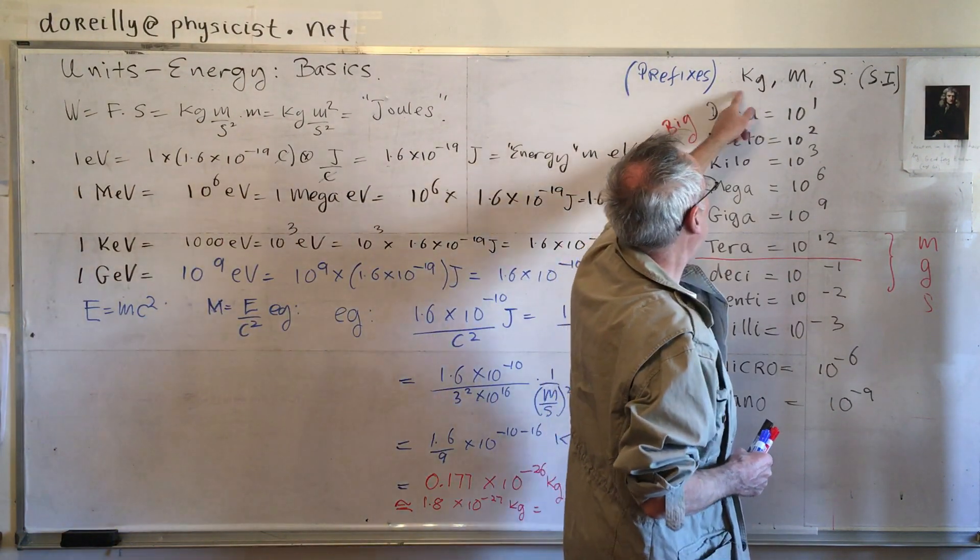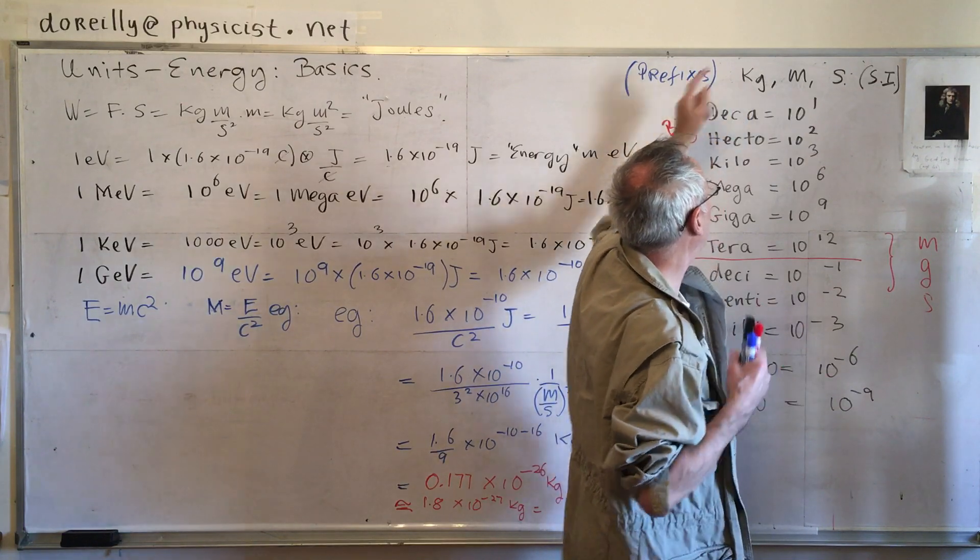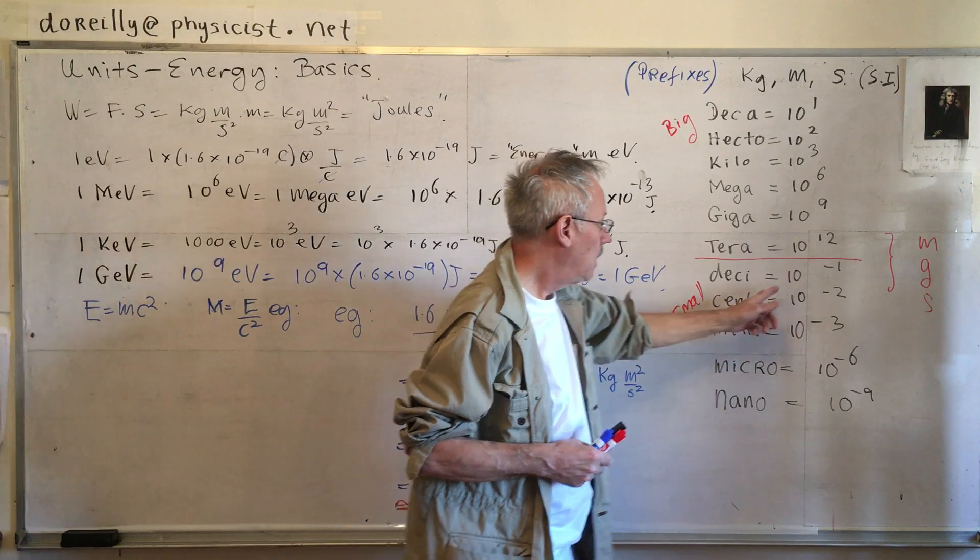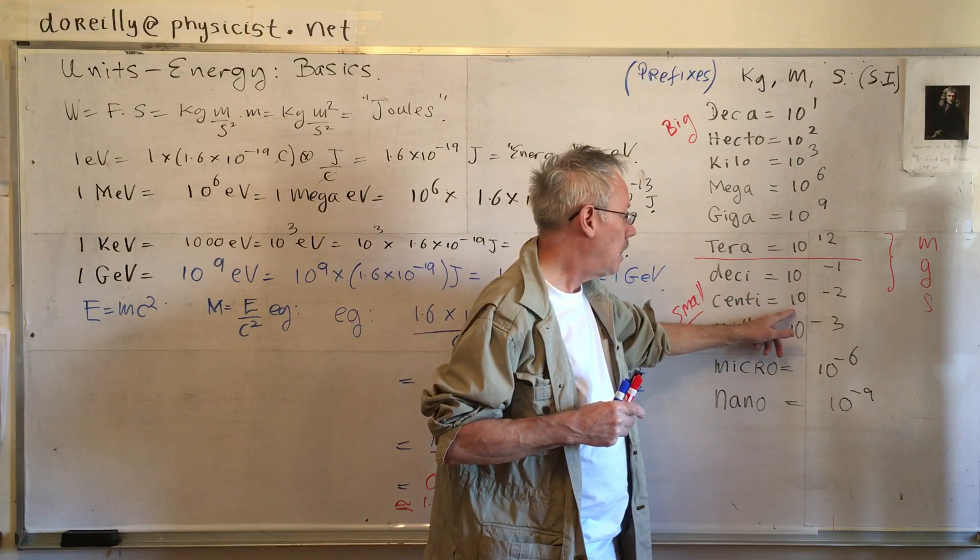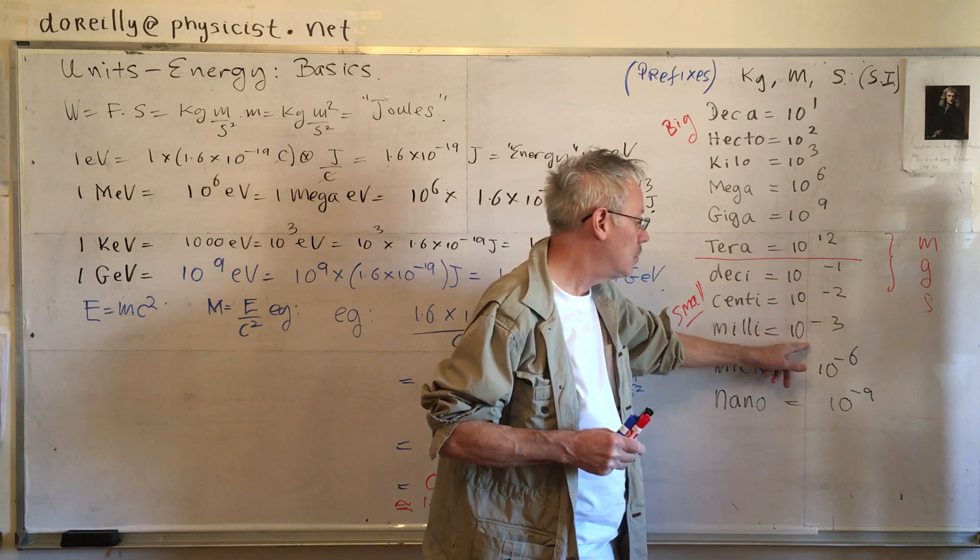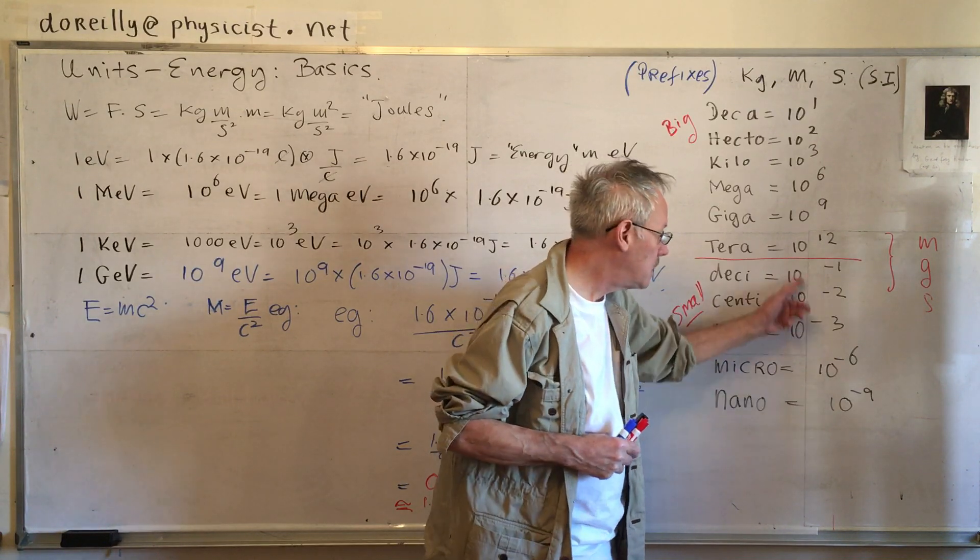So, prefixes for the kilograms, meters, and seconds. Really, it's the grams, but we put a kilo over there. Now, big and small. Small were these ones. 10 to the power of minus 1 is one-tenth. Minus 2, one-hundredth. One-thousandth, one-millionth, and one-billionth.